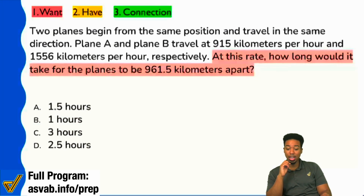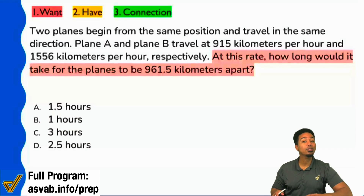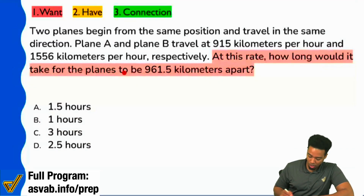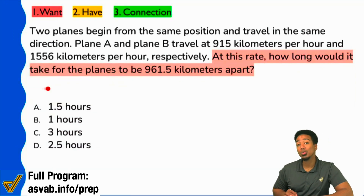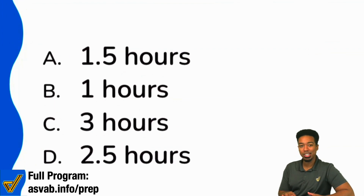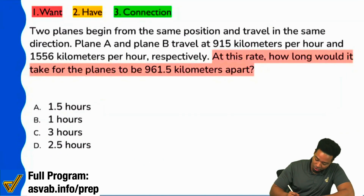Rixos says time — time! Not kilometers, not quite kilometers. We're looking for time. Notice that it says 'at this rate, how long would it take?' And if you take a look at the answer choices, those are all times. So I hope you understand that we are looking for time.